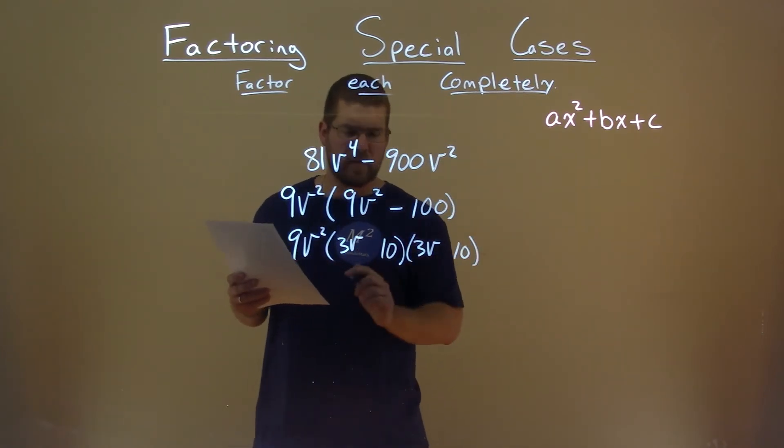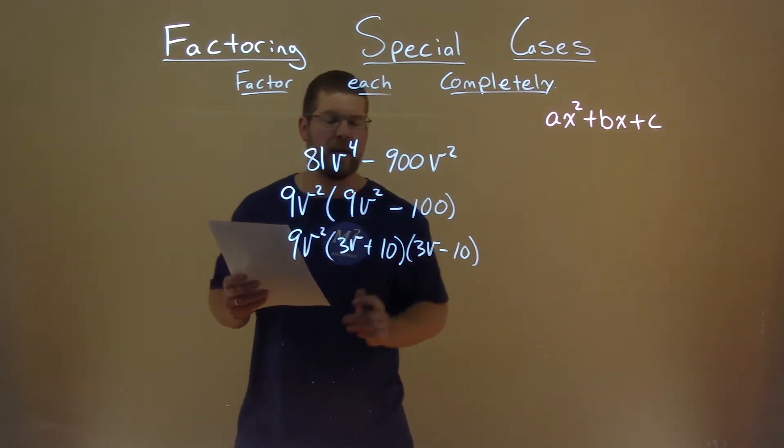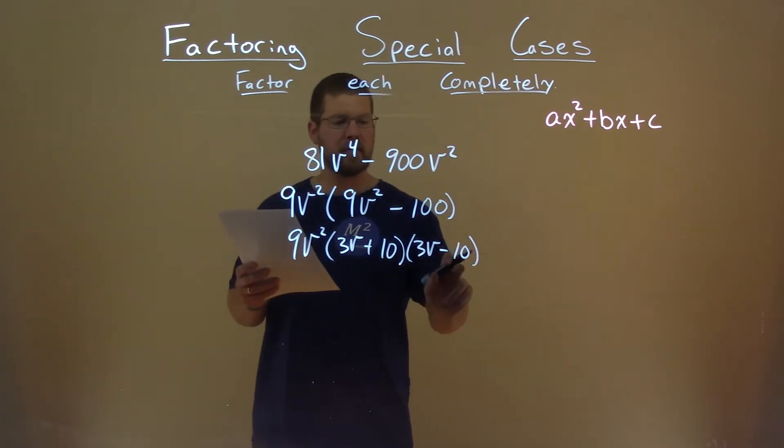Well, it has to be a negative 100. Make that positive, make that a minus, and 10 times a negative 10 is negative 100.